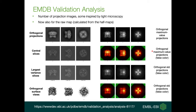In the map visualization area, we have orthogonal projections, central slices, largest variance, and orthogonal surface views. We also have newly created images like orthogonal max value projection, orthogonal max value projection in false color, and orthogonal standard deviation projection with its false-colored images. Those false-colored images are inspired by light microscope images. This allows visual assessment of internal details, with which you can check if a particle exists in the map, if any mask has been applied, and check some internal details.